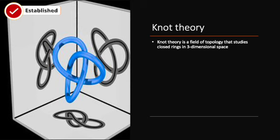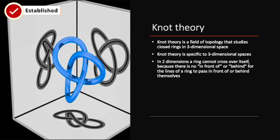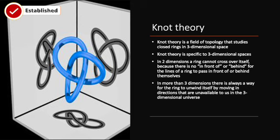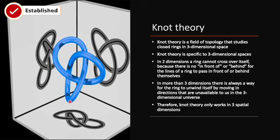Knot theory is a field of topology that studies closed rings in three-dimensional space. Topology is a field of math very similar to geometry, but it classifies shapes by different criteria. Knot theory is specific to three-dimensional spaces. In two dimensions, a ring can't cross over itself because there's no 'in front of' or 'behind' for the lines of a ring to pass through. In more than three dimensions, there's always going to be a way for the ring to unwind itself by moving in directions not available in three dimensions. Therefore, knot theory only works in three spatial dimensions.